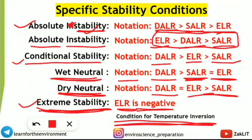Extreme stability with a negative environmental lapse rate gives the condition for temperature inversion — a specific atmospheric condition where temperature increases as you move upward. So extreme stability means ELR is negative, while absolute stability means DALR is highest, followed by SALR, then ELR. Make this table in your notes — it is one of the five star concepts coming frequently in the examination.